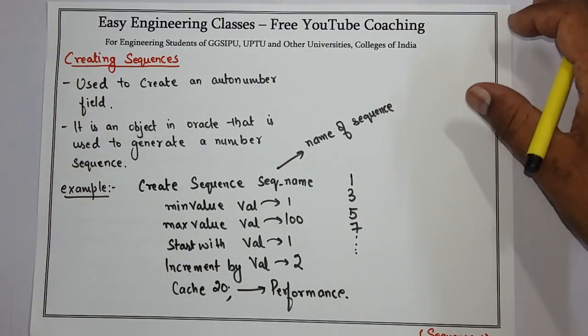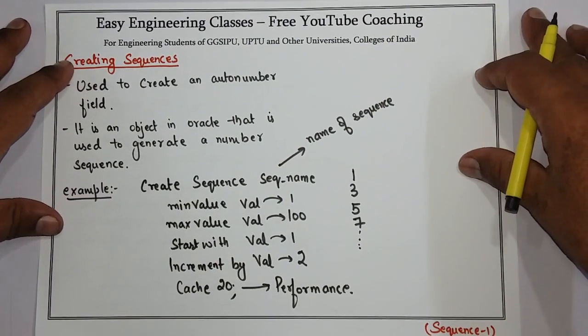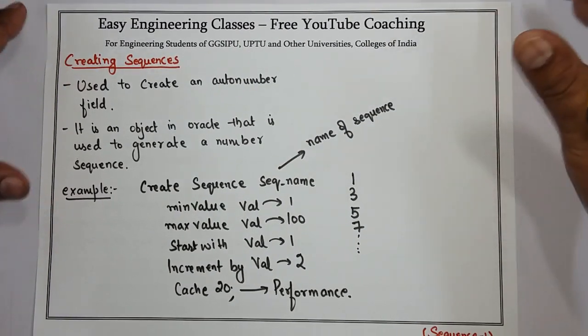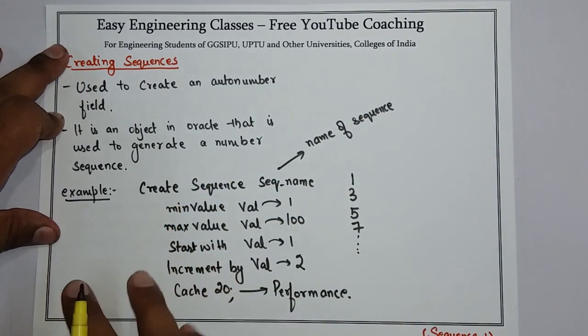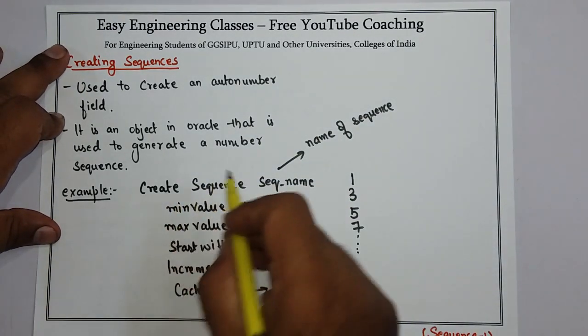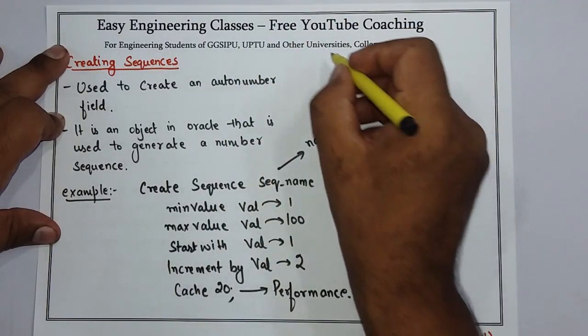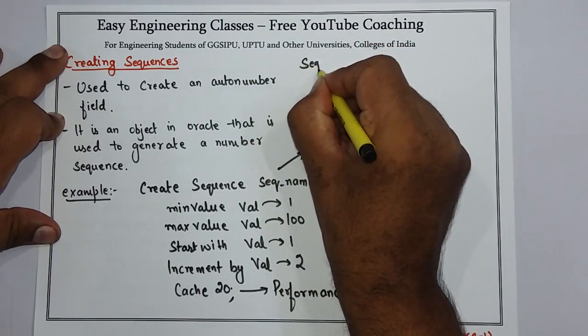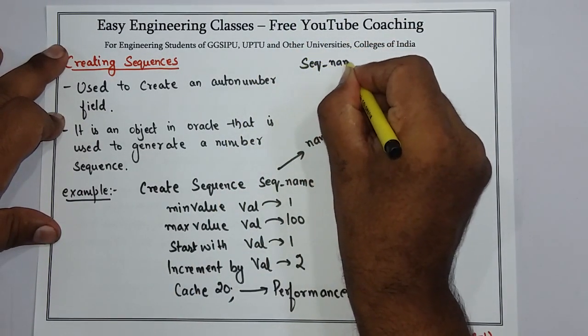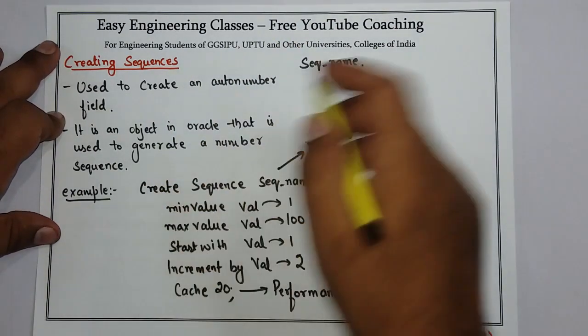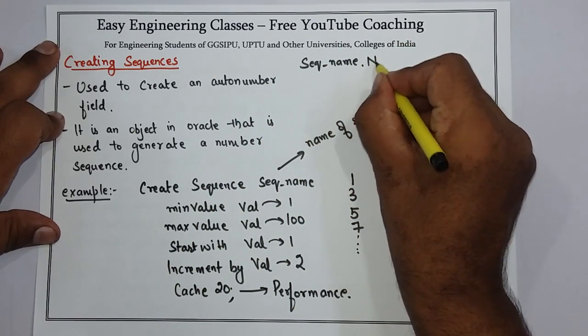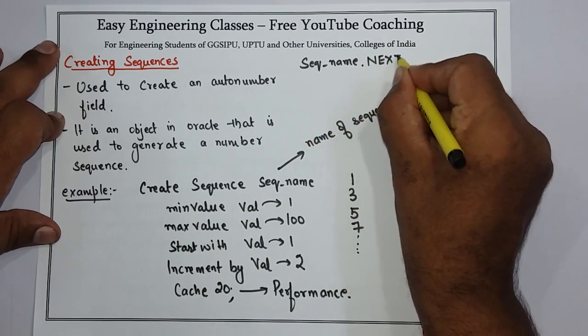Now to use sequence you can use it in the create command or in the insert command also. So how do you use that is, use the sequence name, use sequence underscore name. Now if you want to get the next value of the sequence, you have to call a parameter which is nextval.